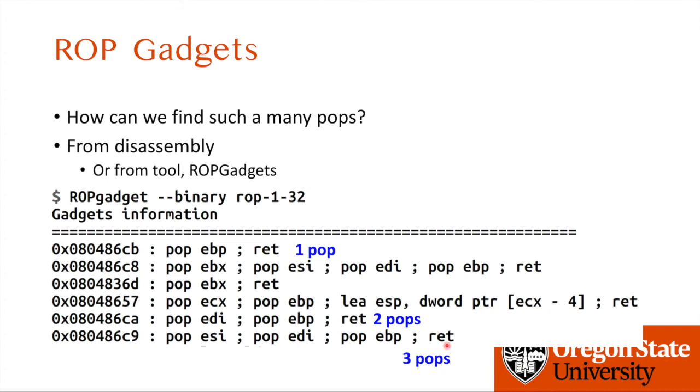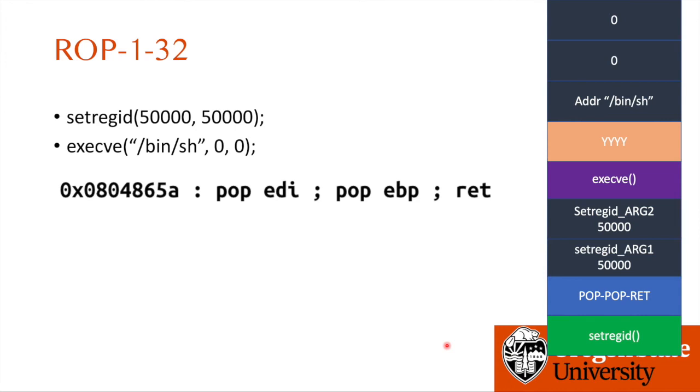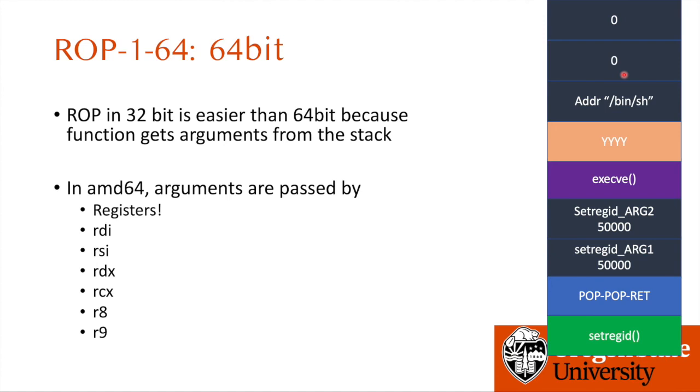In summary, to solve the ROP1 challenge in 32-bit, your task is to configure your stack like this: first call setregid with two arguments, then return to the location of the pop, pop, return instruction. It will pop to EDI, pop to EBP, then return to execve. Then for execve, we can set any kind of arguments for the function. Then the question is: what will be different in 64-bit architecture?